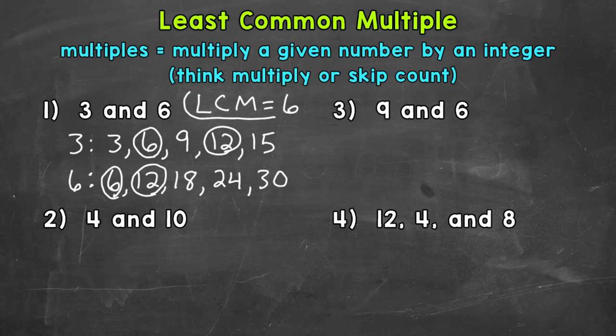Let's try another example and move on to number two, where we have four and 10. So we'll start with some multiples of four. So skip count or think of it as four times one, four times two, so on and so forth. Let's skip count for this one.